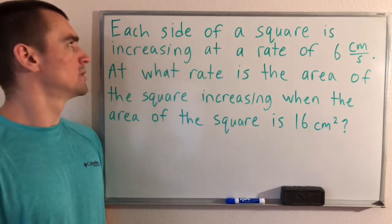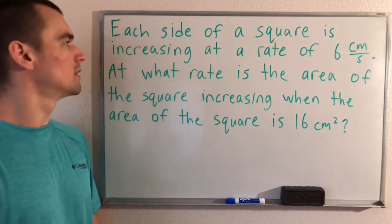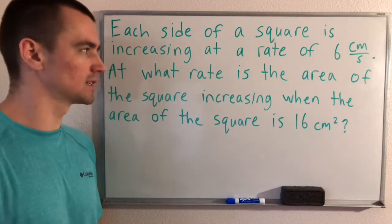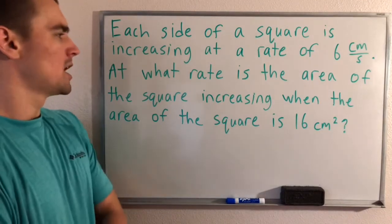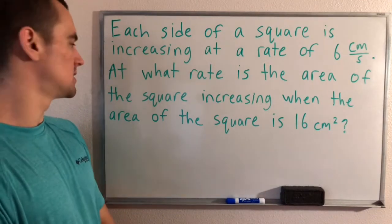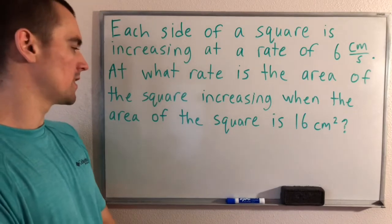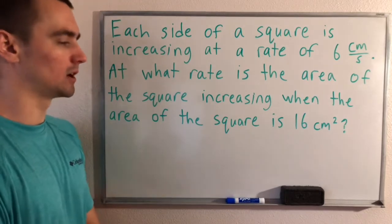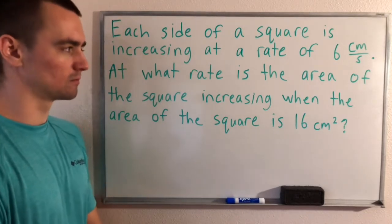The problem is: each side of a square is increasing at a rate of 6 centimeters per second. At what rate is the area of the square increasing when the area of the square is 16 centimeters squared?